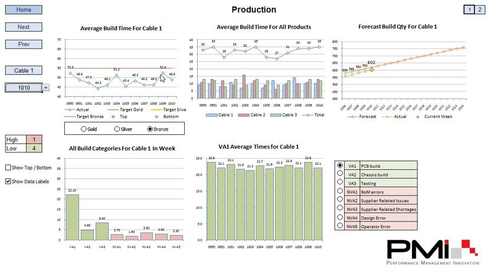So by having only one target line on the chart at one time you're not cluttering up the chart. You're not overloading the user with too many things to look at, thus losing the message. So by simply clicking on the point that you want to see, you can pull in that particular piece of information.